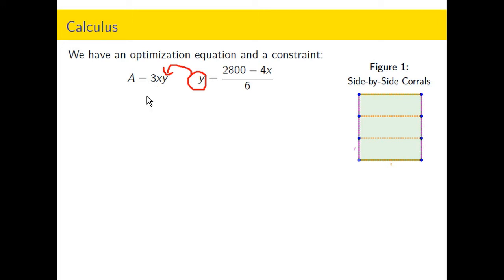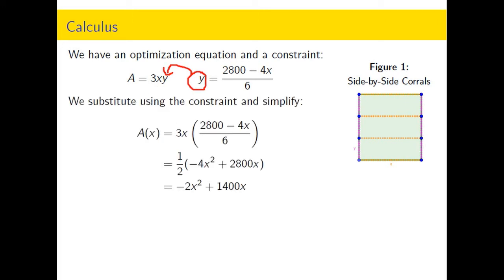You can see that this simplifies. By the way, I'm doing two steps here: I'm distributing the x to these two terms and I'm pulling out the six, so I'm factoring with the six and distributing with the x. The area function is minus 2x squared plus 1400x.